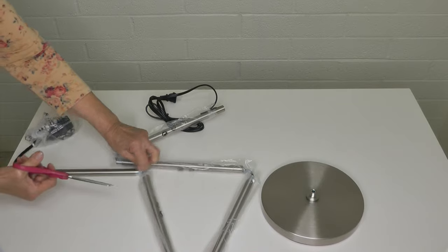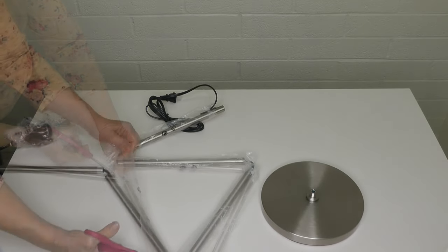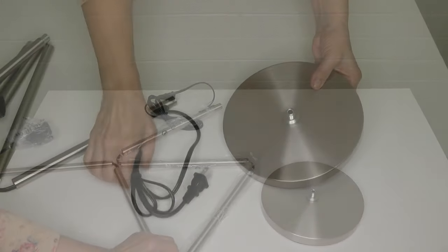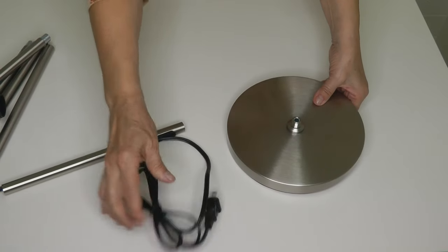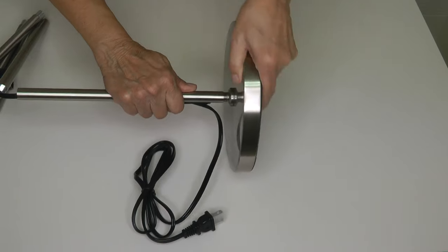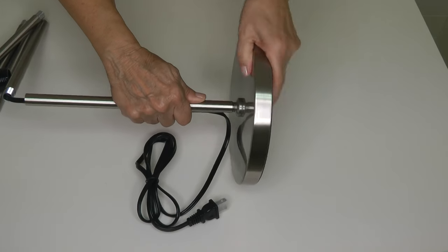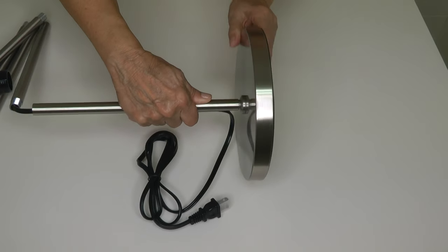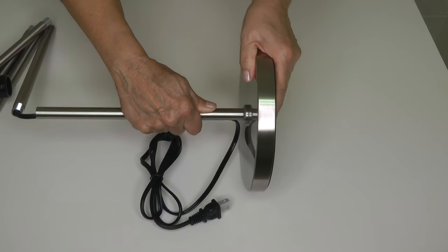Everything is wrapped so it won't scratch, so remove all the plastic wrap and get ready to assemble it. Take the bottom of the pole and attach the base. The base just wants to spin on to it.